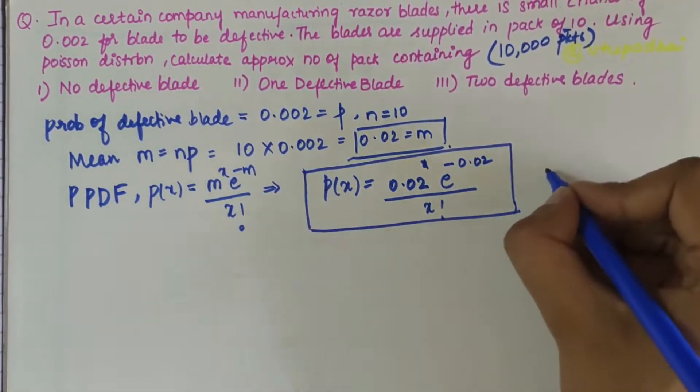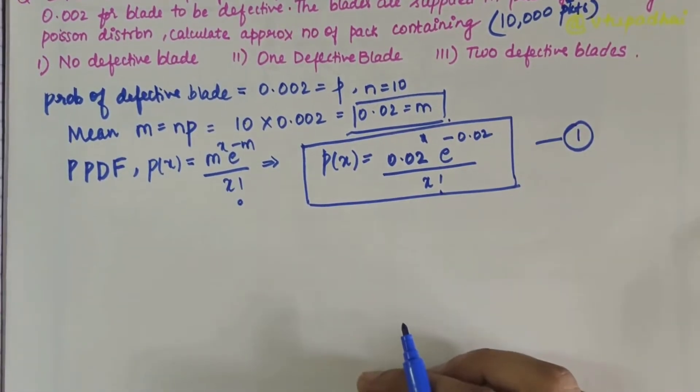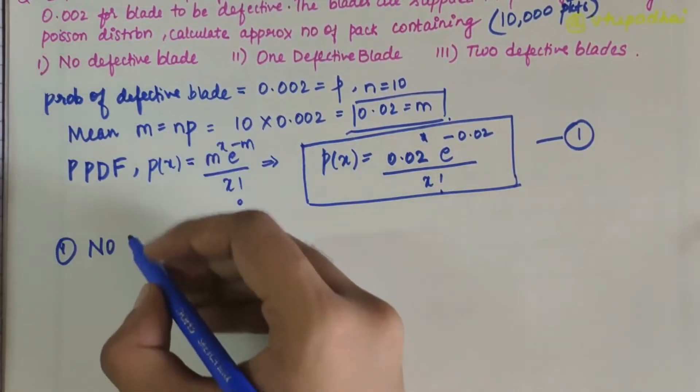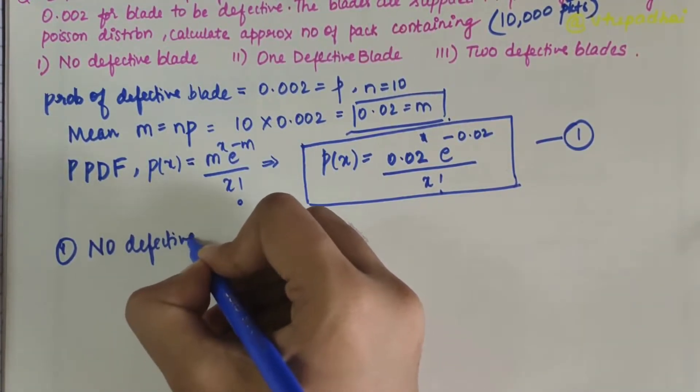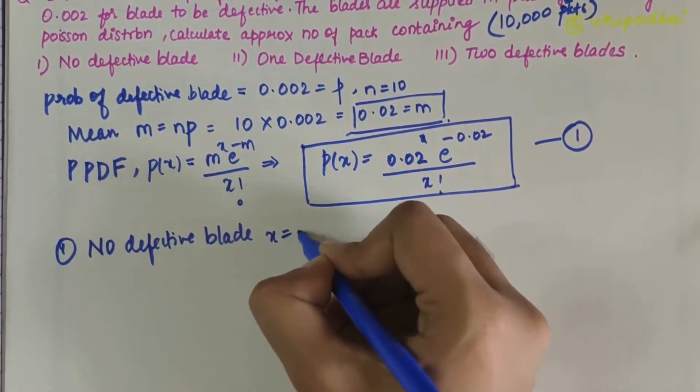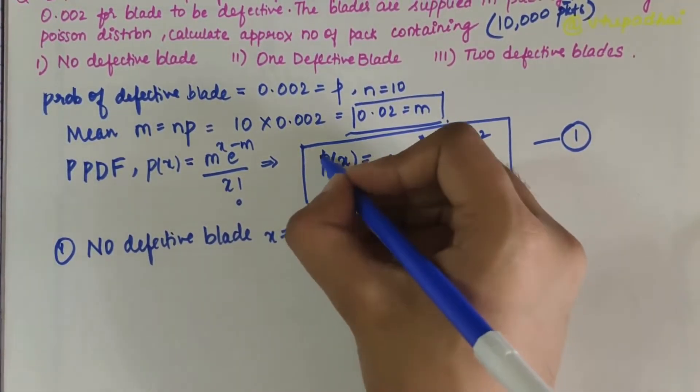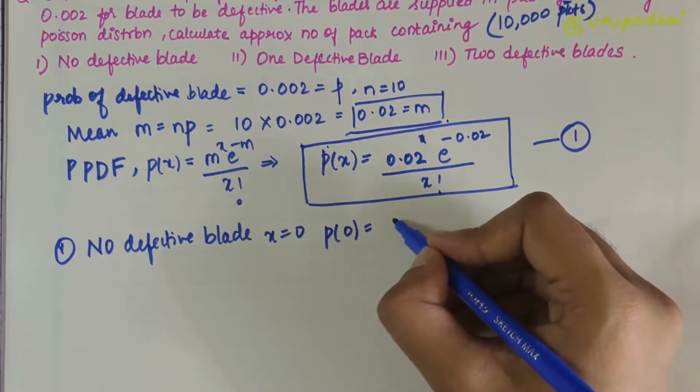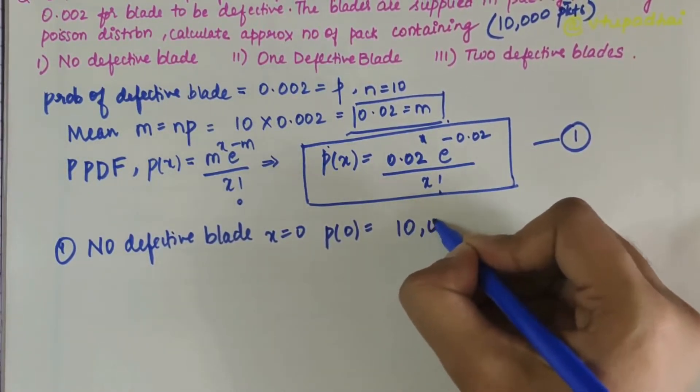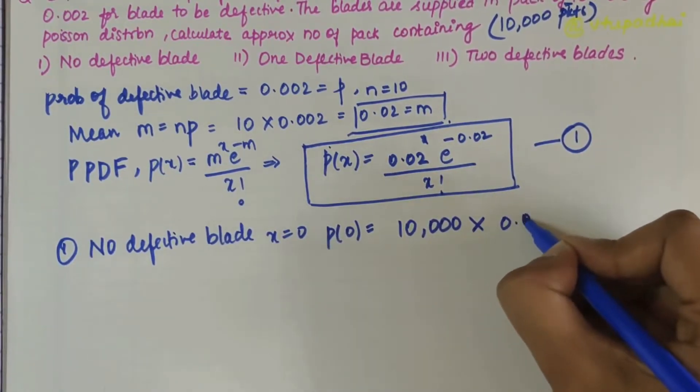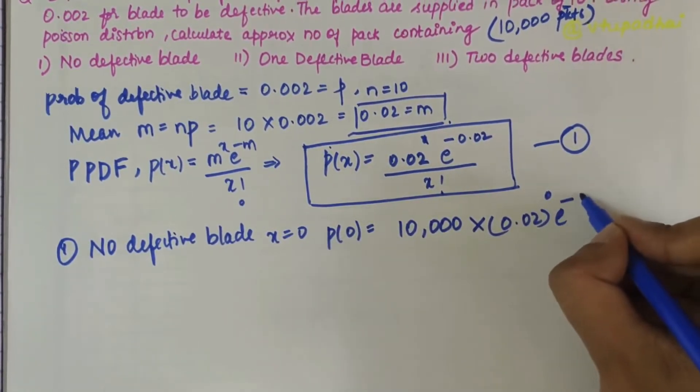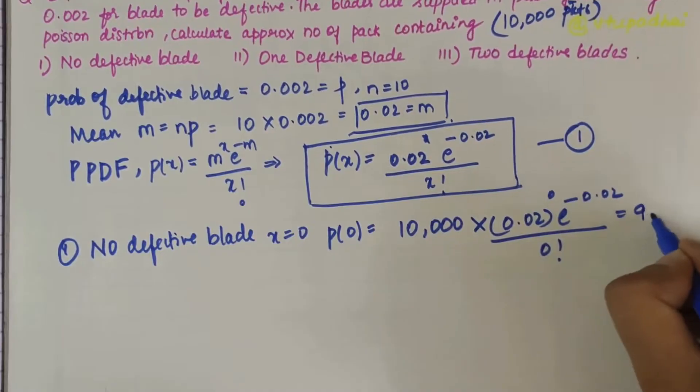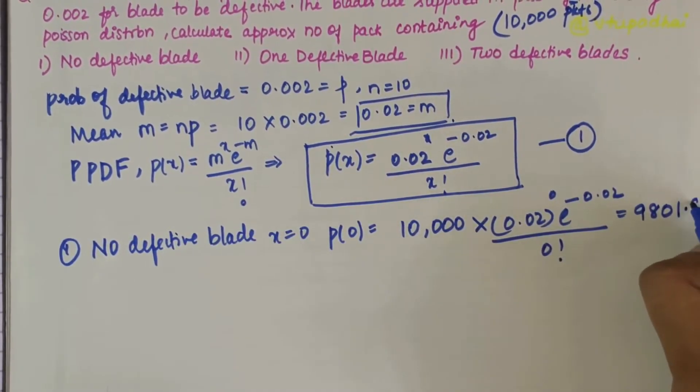This is the standard equation. In the first part, they ask for no defective blade, which means X = 0. When X = 0, P(0) = 10,000 × (0.02^0 × e^(-0.02)) / 0!. If you solve this, you get 9801.98.